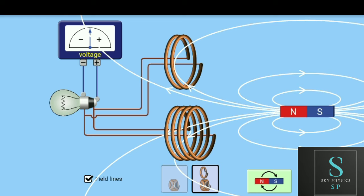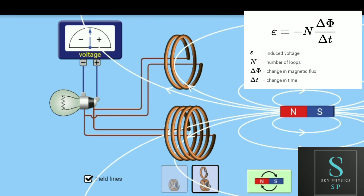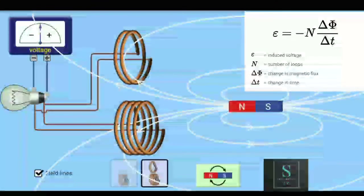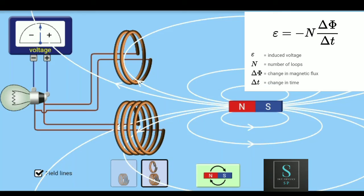The formula is: e equals negative N times change in flux per unit time. Here e is the EMF, d phi means change in flux per unit time, and N is the number of turns. The minus sign shows that the deflection direction will be changed and the direction is opposite.